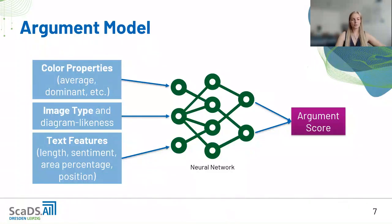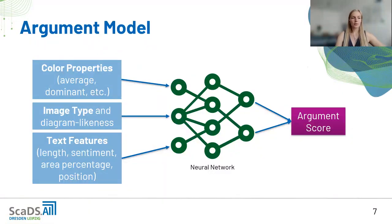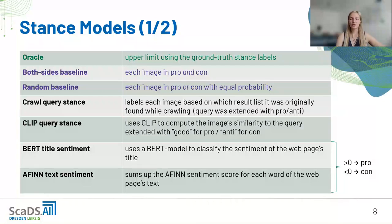The argument model is a neural network taking features grouped into three categories: first, color properties such as average and dominant color; second, image type and diagram-likeness using simple heuristics, since we believe diagrams can be very argumentative; and third, text features about the OCR text on the image, including length, sentiment, area percentage, and position. Both the topic model and argument model were inspired by Touche Lab approaches that already got very good results, so we focused our efforts on developing and comparing different stance models.